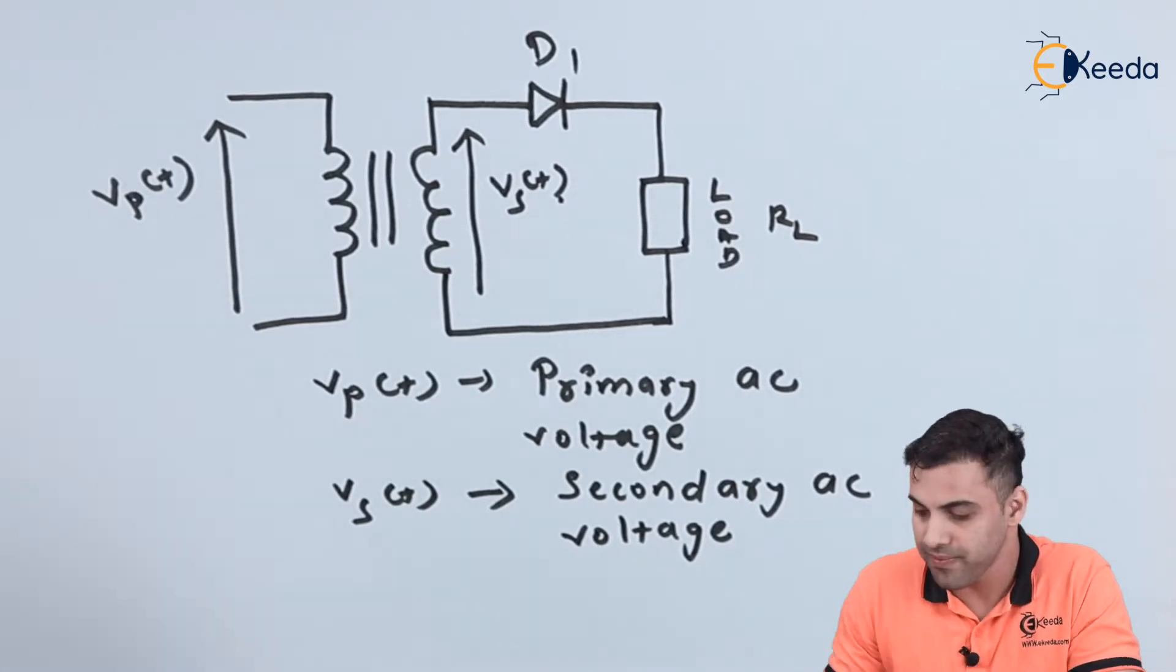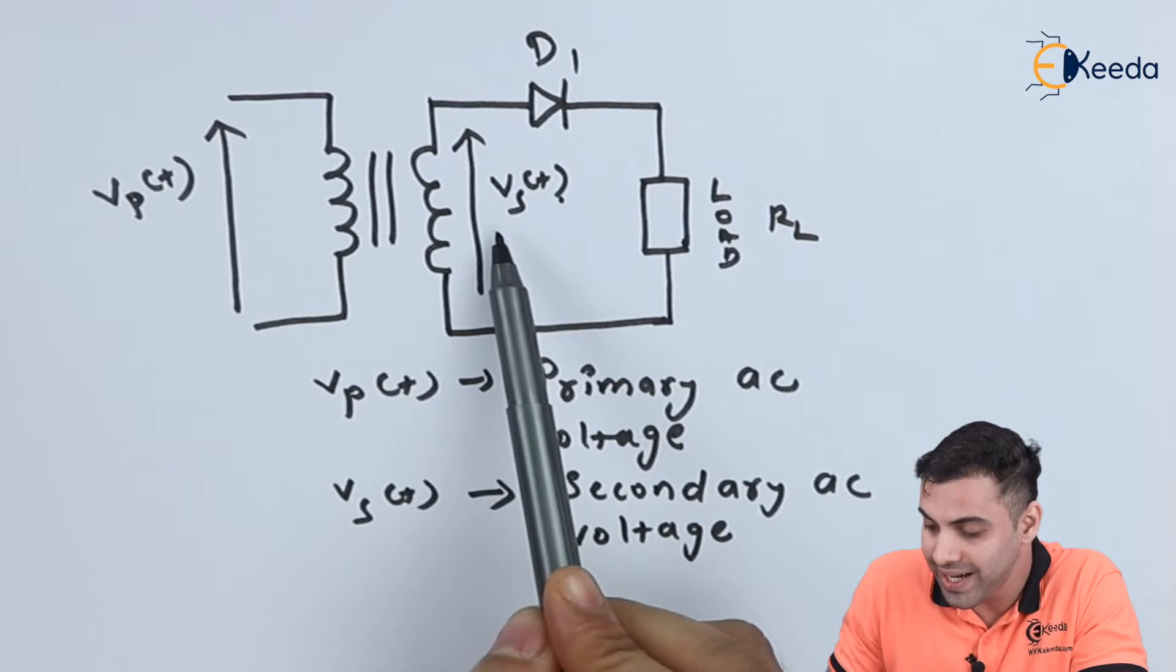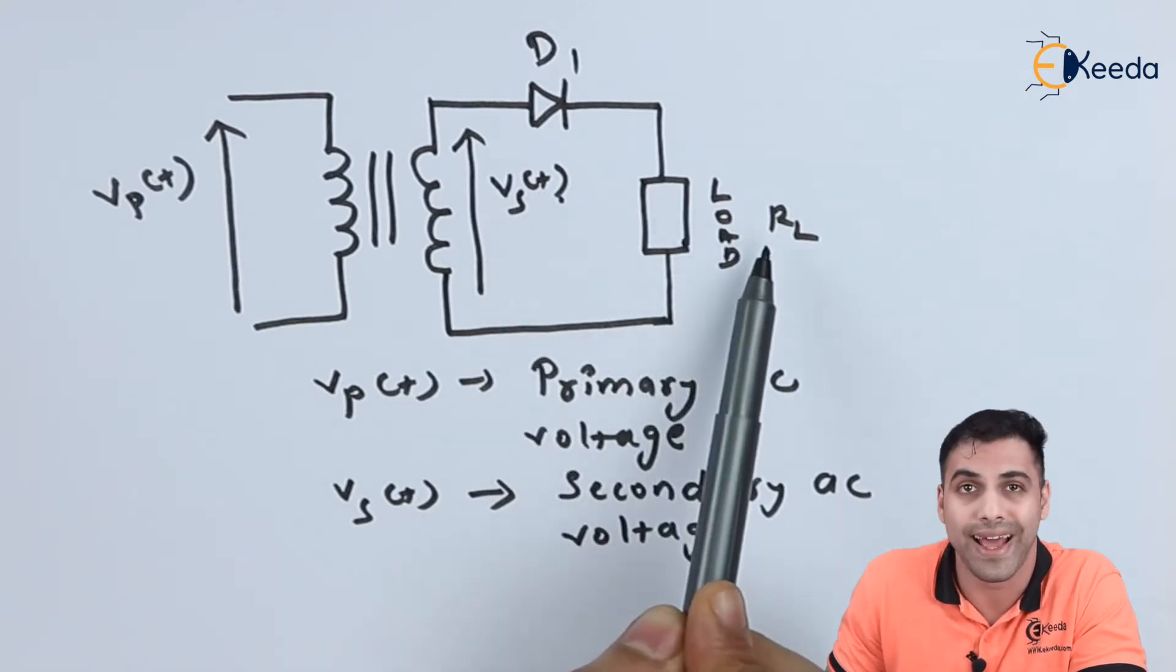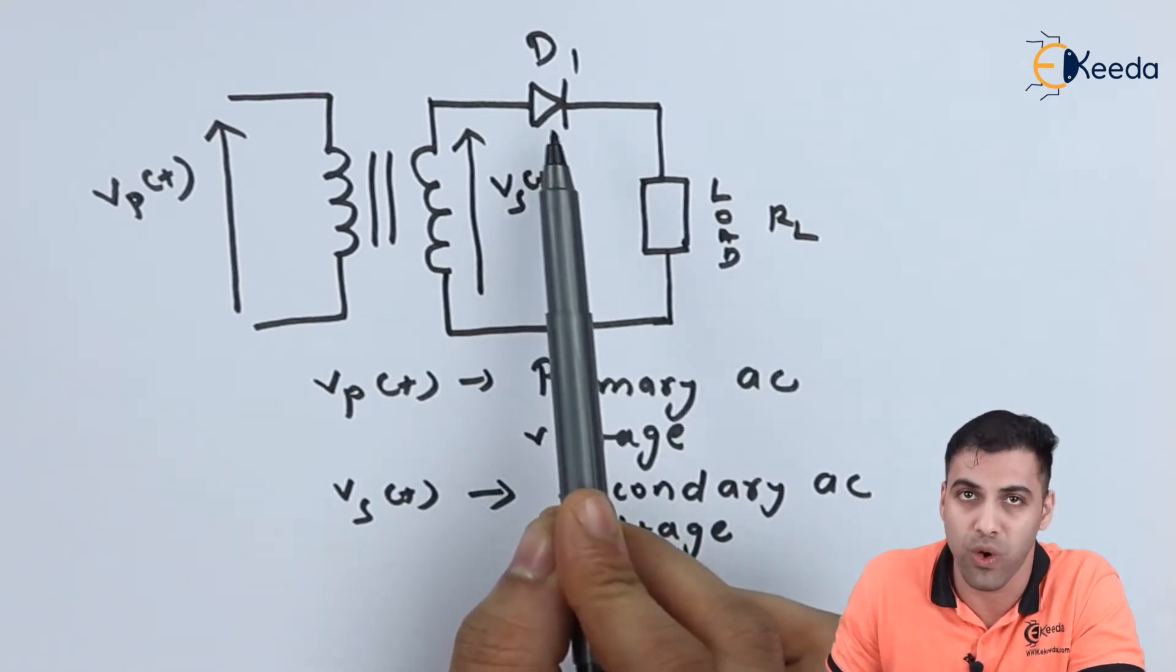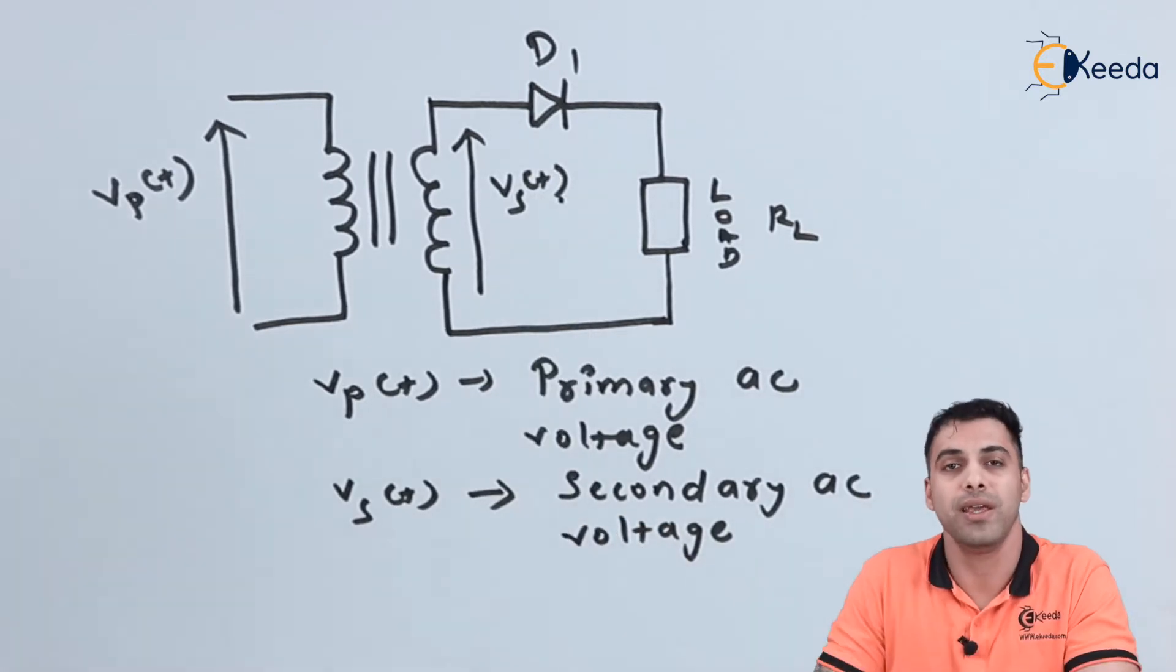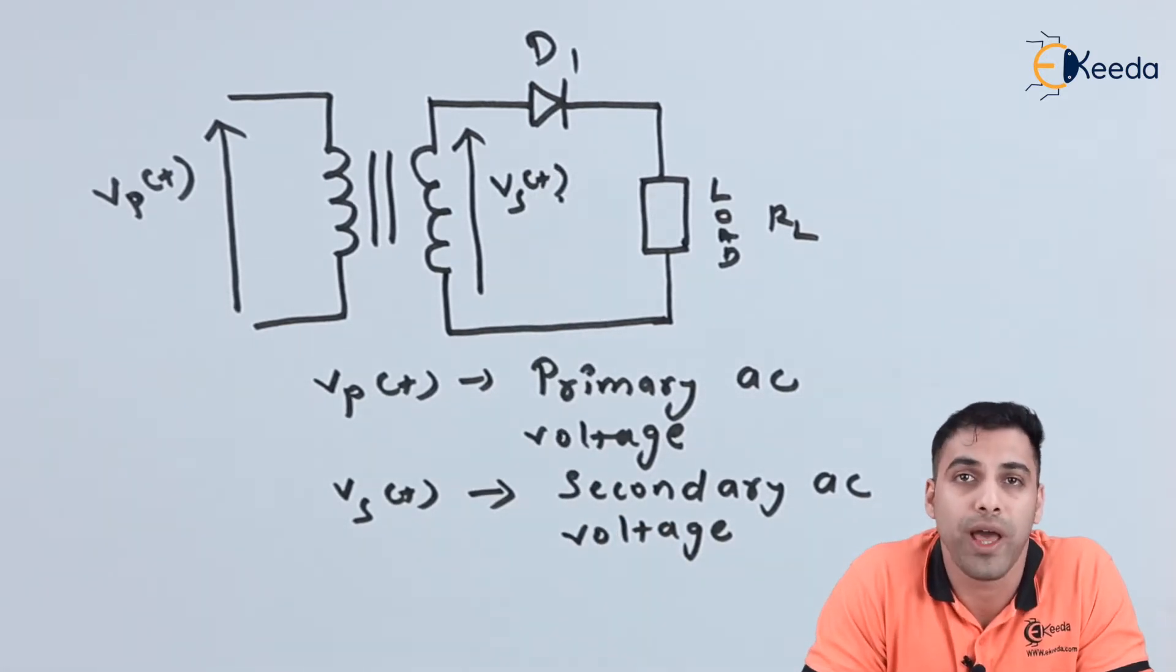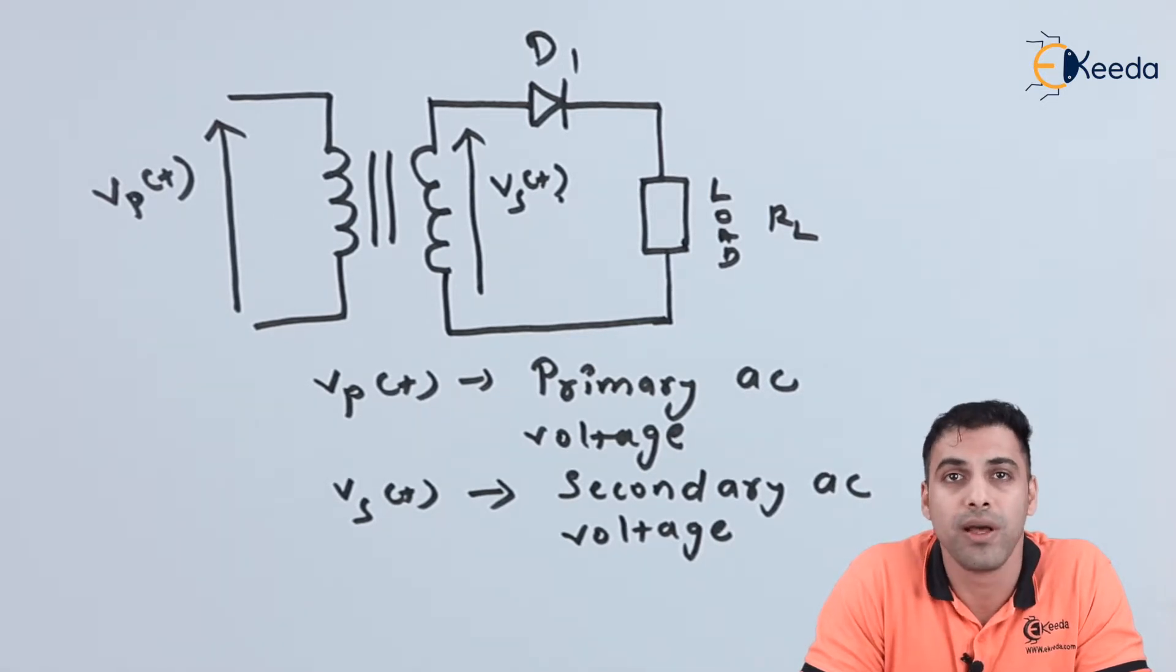Here what I have done in the circuit is I am giving a secondary AC voltage to a load RL through a diode D1. As you can see in an AC signal, we have both positive and negative pulses, but a diode allows the flow of electric current only in one direction.